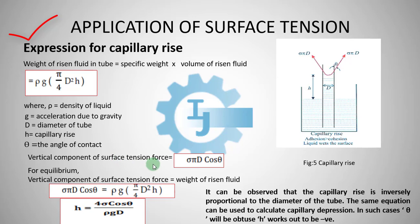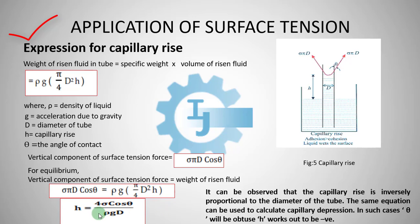The vertical component of surface tension force is σ × π × d × cos θ. For equilibrium, the vertical component of surface tension force equals the weight of the rising fluid: σ × π × d × cos θ = ρ × g × (π/4) × d² × h. Solving for h gives: h = 4σ cos θ / (ρgd). This is the expression for capillary rise.